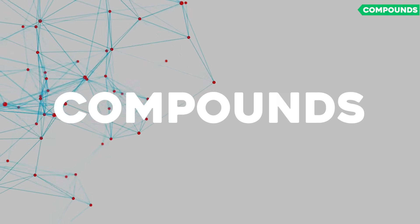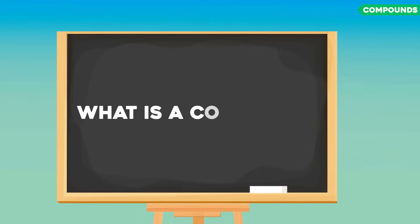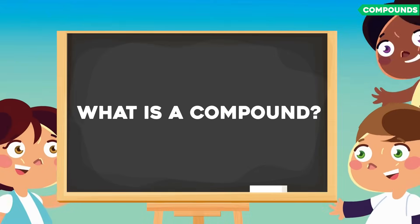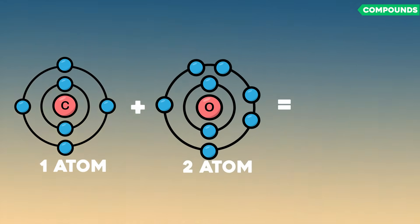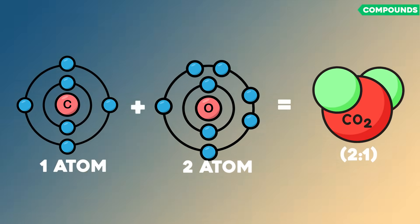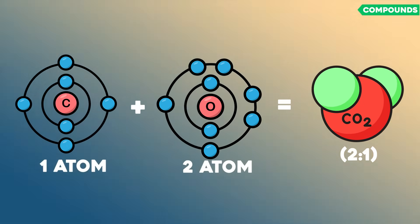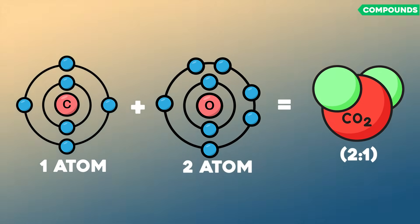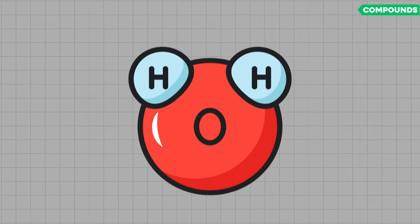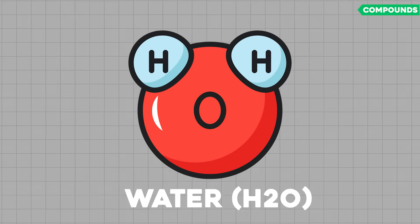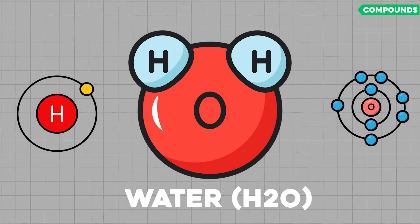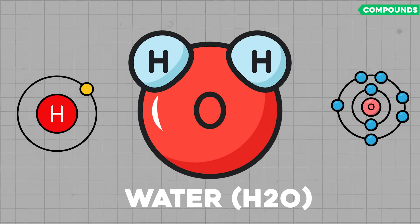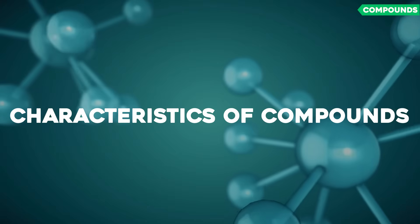Part 2: Compounds. What is a compound? A compound is a substance formed when two or more elements combine chemically in a fixed ratio. For example, water, H2O, is a compound made from hydrogen and oxygen atoms.